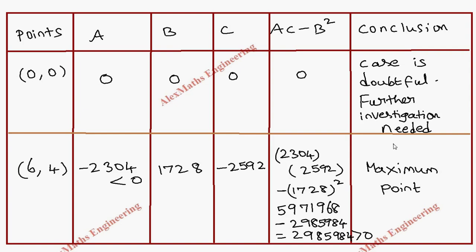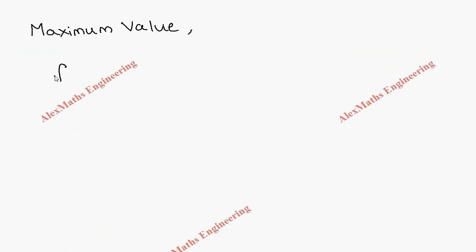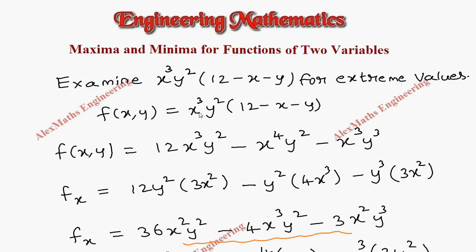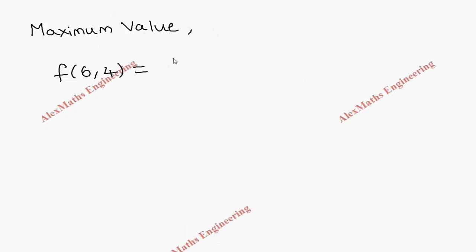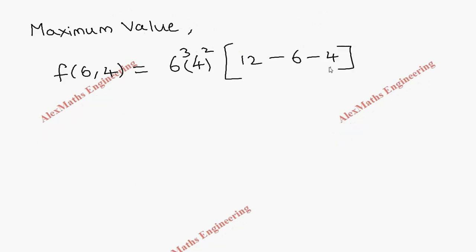To find the maximum value, we substitute (6, 4) into the original function f(x, y) = x³y²(12 - x - y): f(6, 4) = 6³ · 4² · (12 - 6 - 4) = 216 · 16 · 2 = 6912. So the maximum value is 6912.